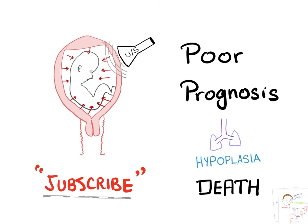To manage it, try to ultrasound the baby in order to know whether he or she will have Potter sequence. The prognosis is very poor due to lung hypoplasia, which is the main cause of death. Please subscribe — we have new videos every single week. Like our page on Facebook, let us know in the comments what videos you'd like to see, and we will make it happen. Thank you very much for your support. Take care.